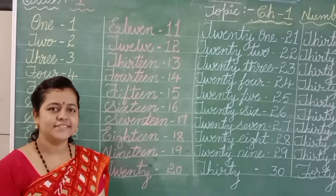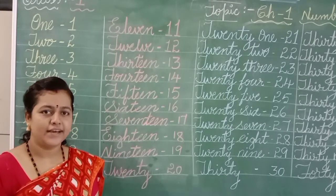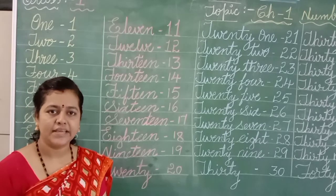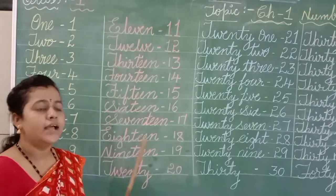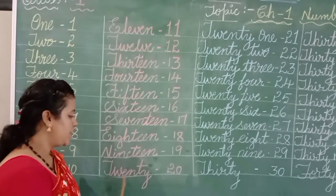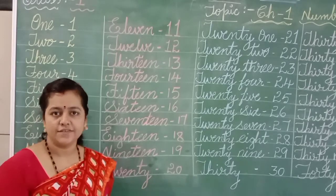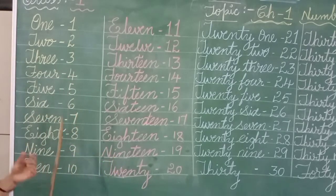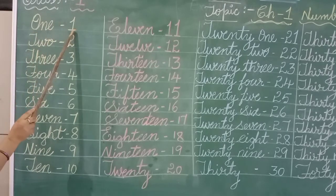Good morning children. Today we are learning math number names from ONE-1 to TWENTY-20. Shall we start now? Let's start.